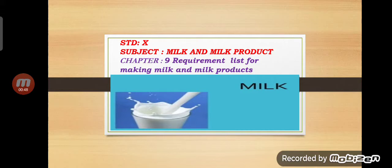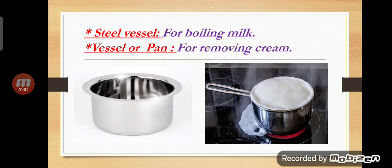The topic is chapter number nine: requirement list for making milk and milk products. The first object is the steel vessel. A steel vessel is used for boiling milk.